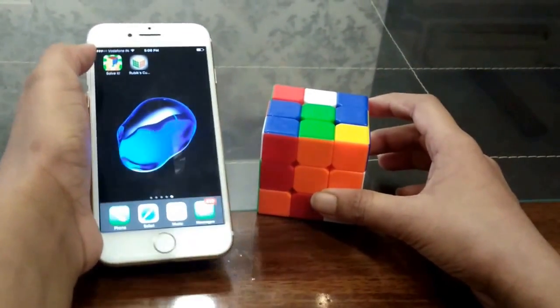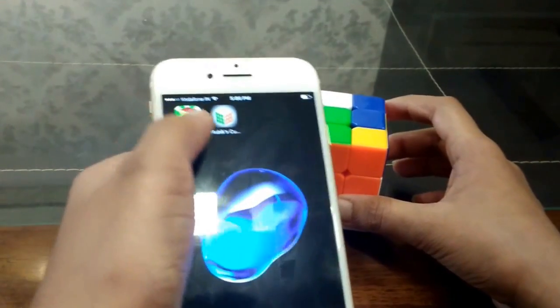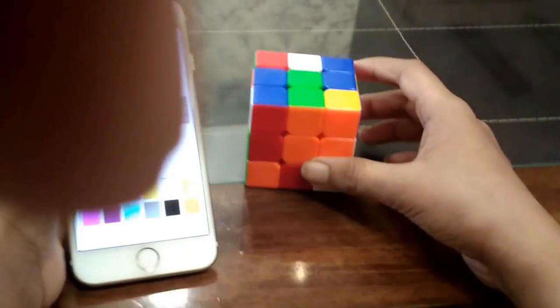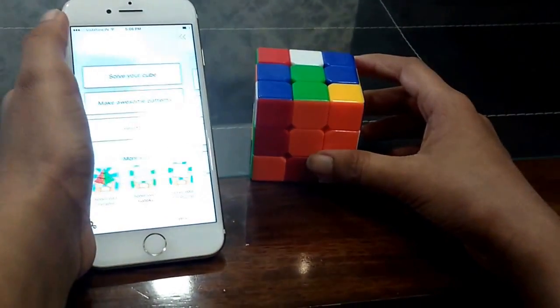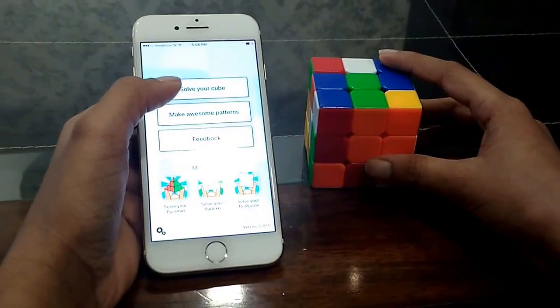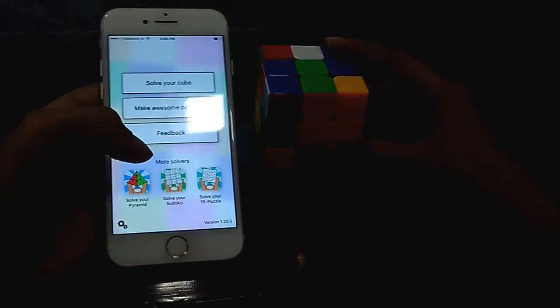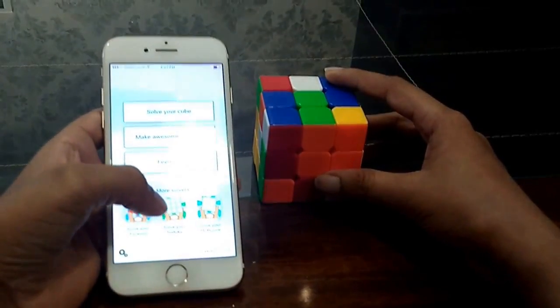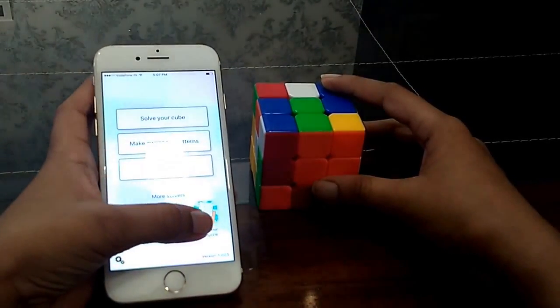The app's name, as you can see, is Solve It. I'm going to press on Solve It. Let's go step by step. There are multiple options here like solve your cube, make awesome patterns, and you can give your feedback. There are many more solvers such as solve your pyramid, solve your Sudoku, solve your 15 puzzle.